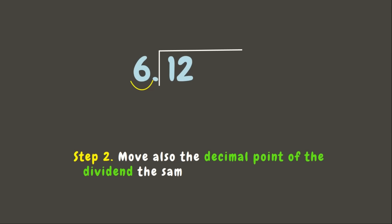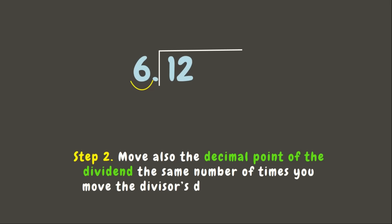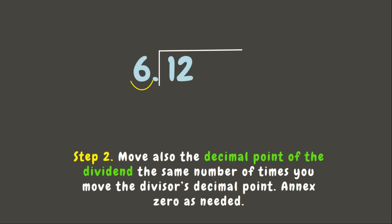Our second step is to move the decimal point of the dividend the same number of times we moved the divisor's decimal point, annexing zeros as needed. The decimal point of a whole number is at the end of the number. Since we moved one time in the divisor, we also move the dividend's decimal point one time to the right. Since there is an empty decimal place, we put zero — so 12 becomes 120.